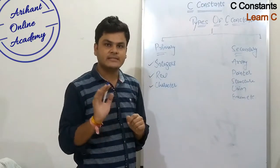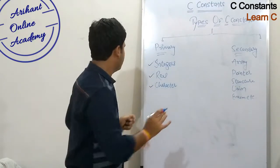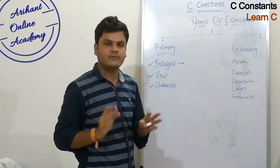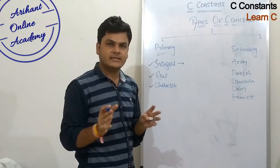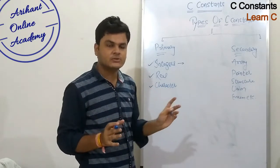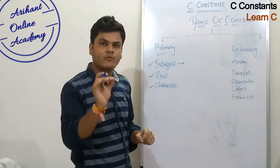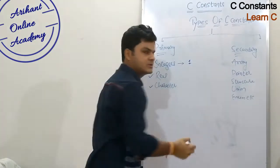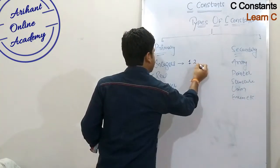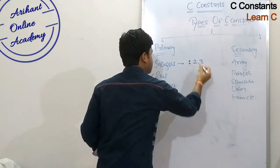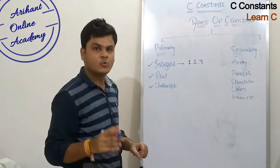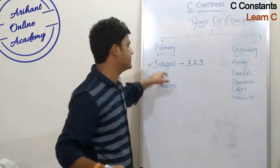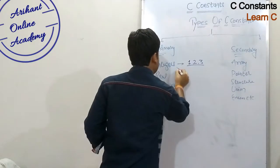What are integer constants? Integer constants should contain the value of any integer. For example, 1 is an integer constant, 2 is an integer constant, 3 is an integer constant — but up to how much can you say it's an integer value? The range of integer values is defined.